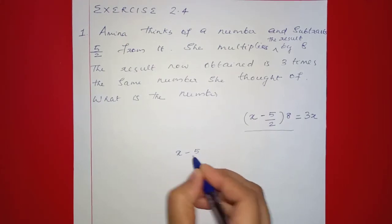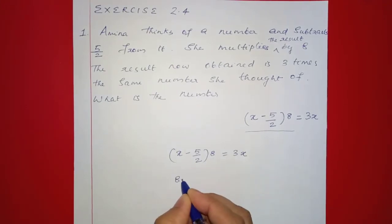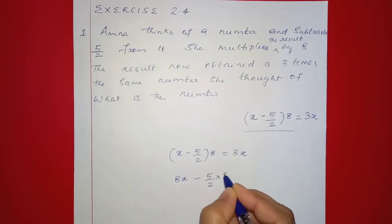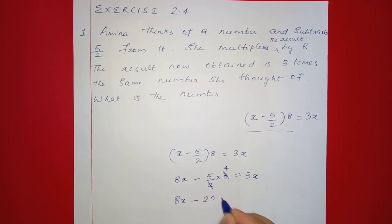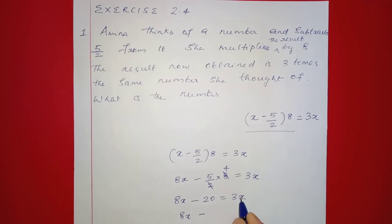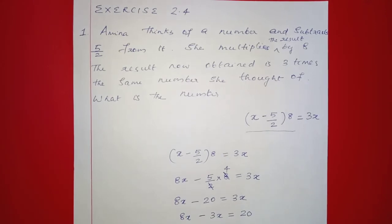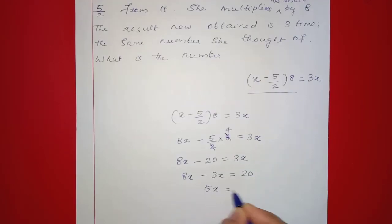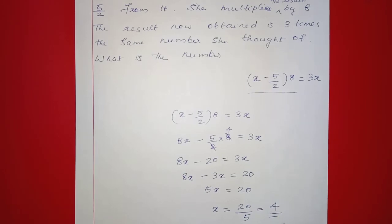The equation is: (x minus 5/2) into 8 equals 3x. Expanding: 8x minus 5 into 4 equals 3x, which gives 8x minus 20 equals 3x. Rearranging: 8x minus 3x equals 20, so 5x equals 20, therefore x equals 4.